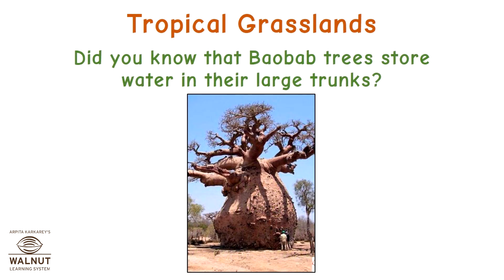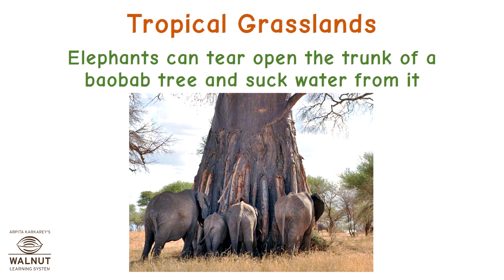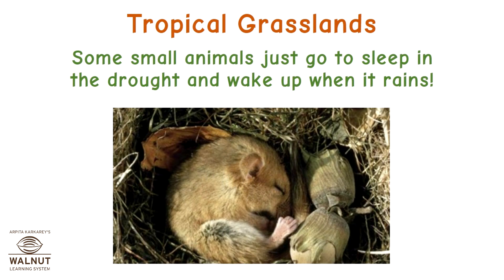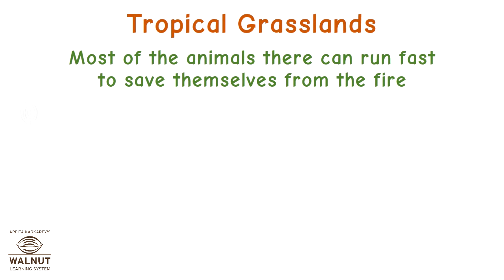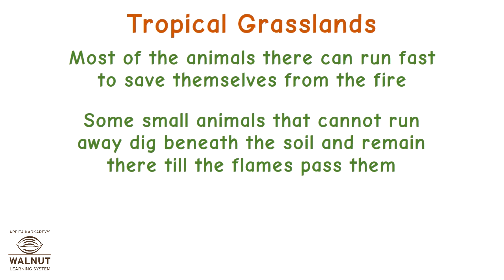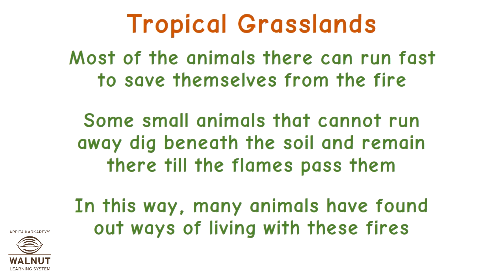The baobab trees store water in their large trunks. Elephants can tear open the trunk of a baobab tree and suck water from it. Some small animals just go to sleep in the drought and wake up when it rains. When it's dry, there are fires in the grasslands. Most animals can run fast to save themselves, while some small animals dig beneath the soil and remain there till the flames pass. In this way, many animals have found ways of living with these fires.